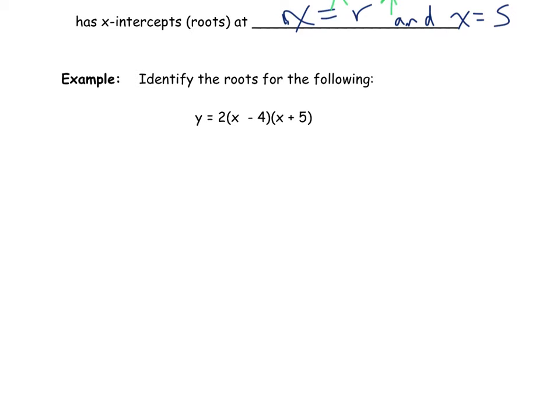Take a minute to check your comprehension: what would the roots be for this quadratic function written in factored form? I can see this takes the form x minus R and x minus S, with a value of 4 and since the other term is plus 5, the x-intercepts are x equals 4 and x equals negative 5. Knowing the roots gives us a second alternative for graphing quadratic functions.